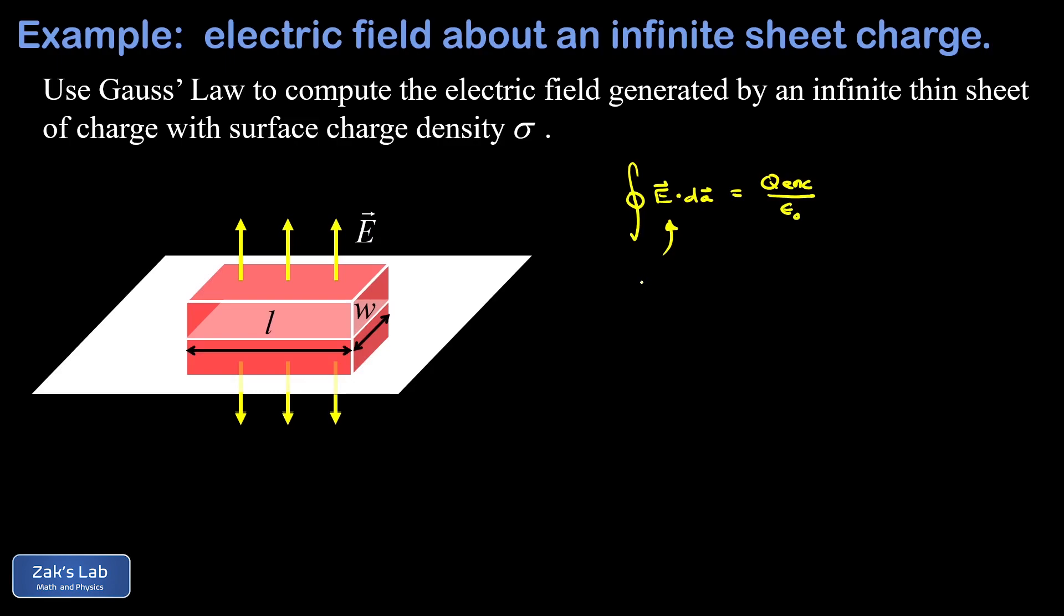So this flux integral over the closed surface really just becomes the integral over the top and bottom of E dotted into dA. But that dot product is trivial by design, we chose a surface so that E would be perpendicular to the area elements.